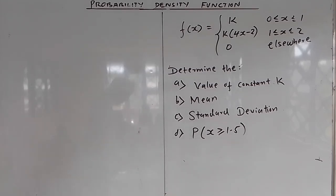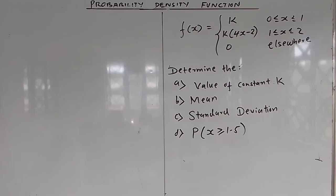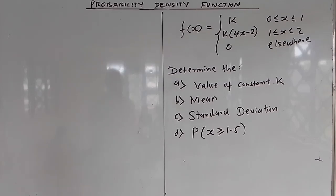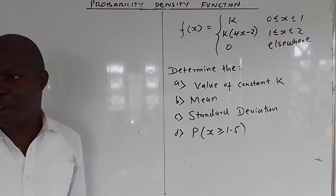In this example, a continuous random variable has a probability density function defined by f(x) = k when x is between 0 to 1, and f(x) = k(4x − 2) when x is between 1 to 2, or 0 elsewhere. You are told to determine the value of constant k, to determine the mean, to determine the standard deviation, and to determine the probability that x is greater than or equal to 1.5.